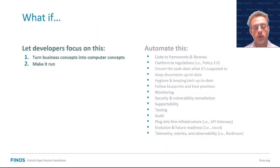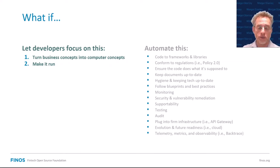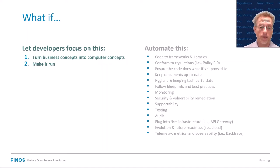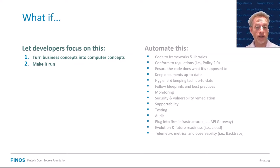Naturally you might think: what if we could go back to just concentrating on what's important — back to turning the business concepts into computer concepts — and we could do something else with all these other things? We can't make them disappear because they're important, they need to be done. There are a couple of ways to deal with it. You can try to put it all behind frameworks, or — and this is what we try to do — you can automate a lot of that. And that's where Morpher comes in.